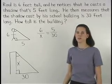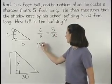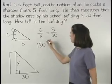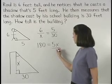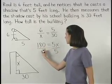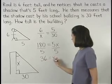Solving from here, we have 6 times 30 or 180 equals X times 5 or 5X. And dividing both sides by 5, 36 equals X.